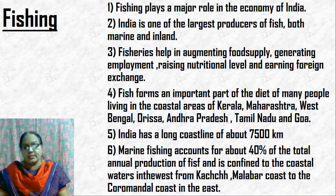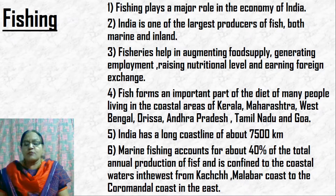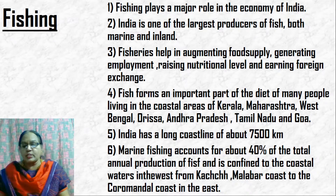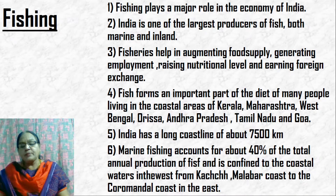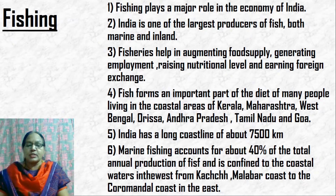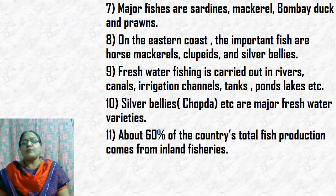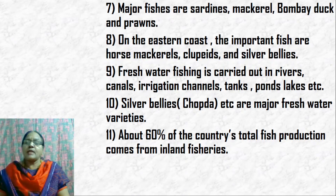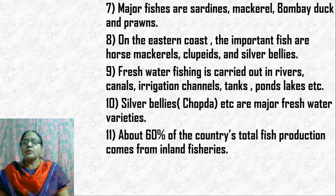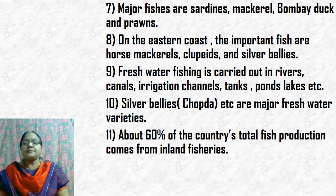Marine fishing is usually confined to coastal waters. Along the western region we have the Kutch coast in Gujarat, the Konkan coast, and the Malabar coast in Kerala. On the eastern side there is the Coromandel coast along Tamil Nadu. Important fish caught on the western side are sardines, mackerel, Bombay duck, and prawns, while on the eastern side they are horse mackerels, clupeids, and silver bellies.